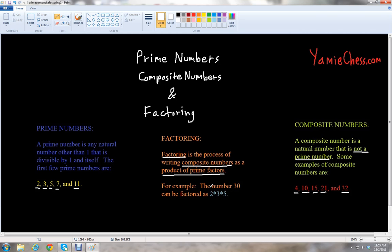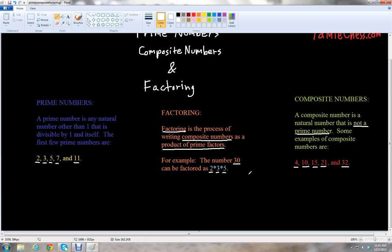We have an example here. The number 30 can be factored as 2 times 3 times 5. Let's see how we got those numbers. If we take 30 and do what's called a factor tree, we know that 30 is an even number, so it's divisible by 2. We'll put 2 here. Then we're going to take 2 into 30. 2 goes into 3 one time, 1 times 2 is 2, 3 minus 2 is 1, bring down the 0. 2 goes into 10 five times, 5 times 2 is 10. So we know that 2 times 15 is 30.